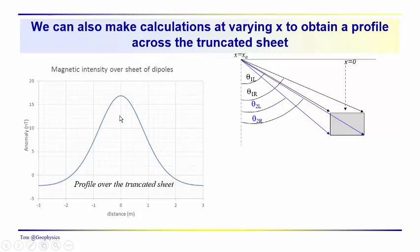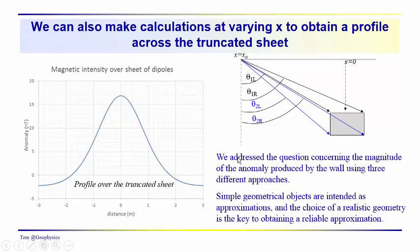This is a profile then over the truncated sheet or the wall, however you want to refer to it. Now a point to emphasize here as we're working with these simple geometrical objects: remember we're using them to help us decide whether a magnetic survey would actually be useful. Would we be able to detect this wall? And we've used three different geometries to do that.